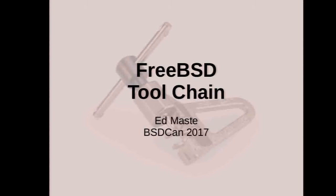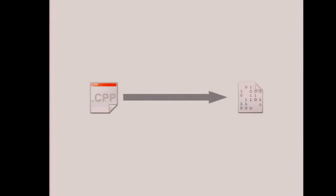Good morning. I'm Ed Mast. I'm going to talk a bit about the FreeBSD toolchain. I'll explain briefly what I mean by the toolchain in FreeBSD — it's anything that transforms source code into some sort of derived binary artifact, and this can be a progression through multiple stages: source code to object file to executable, for example.